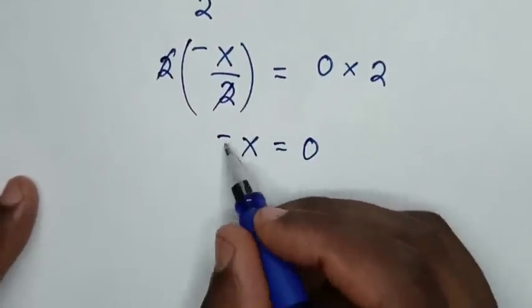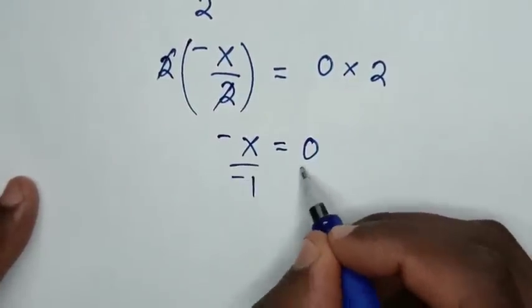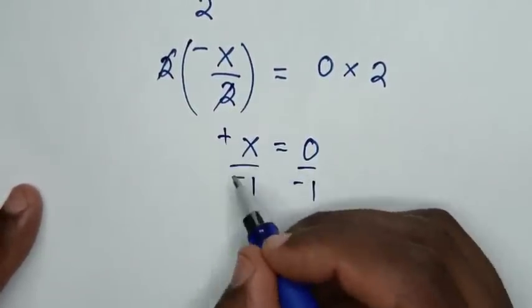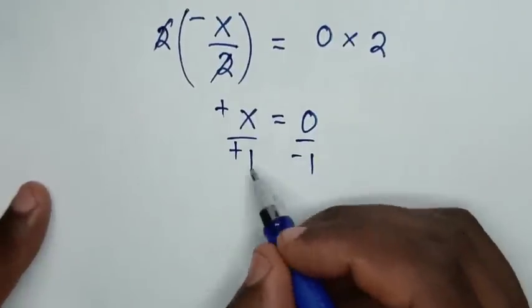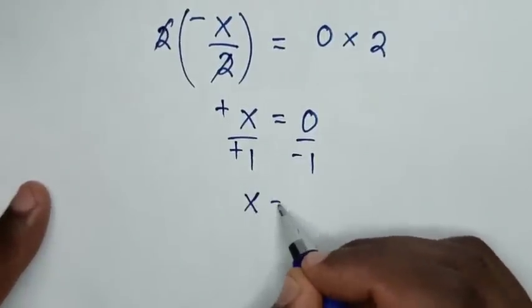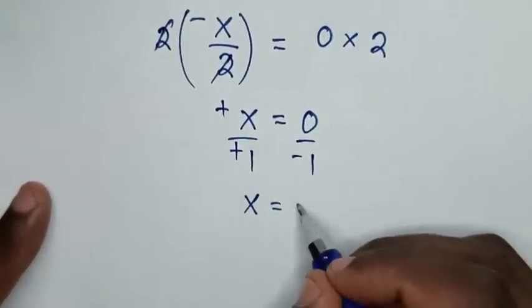To remove the negative, we divide by negative 1 on both sides. Then x equals 0 divided by negative 1, which is 0.